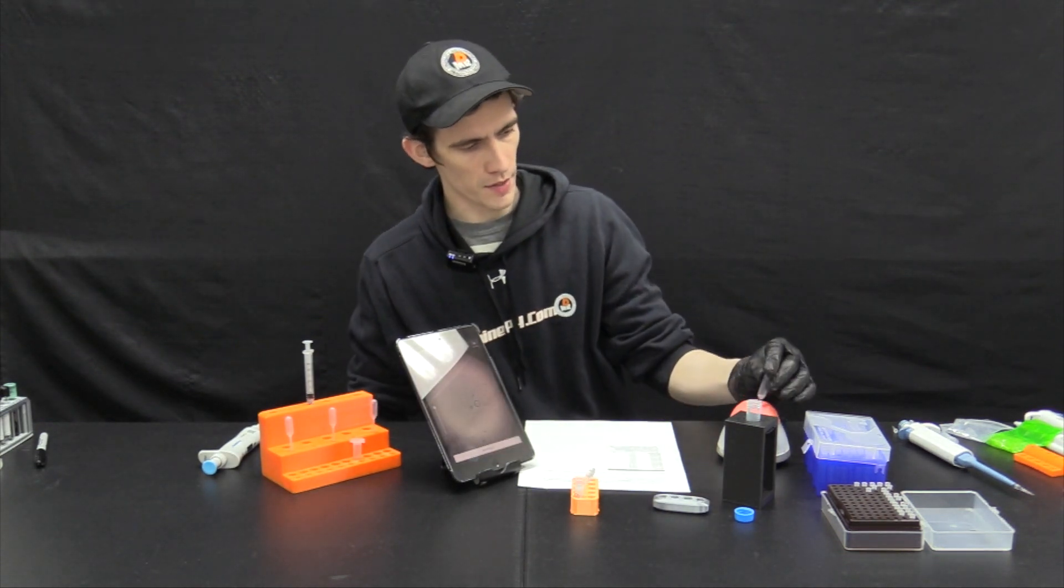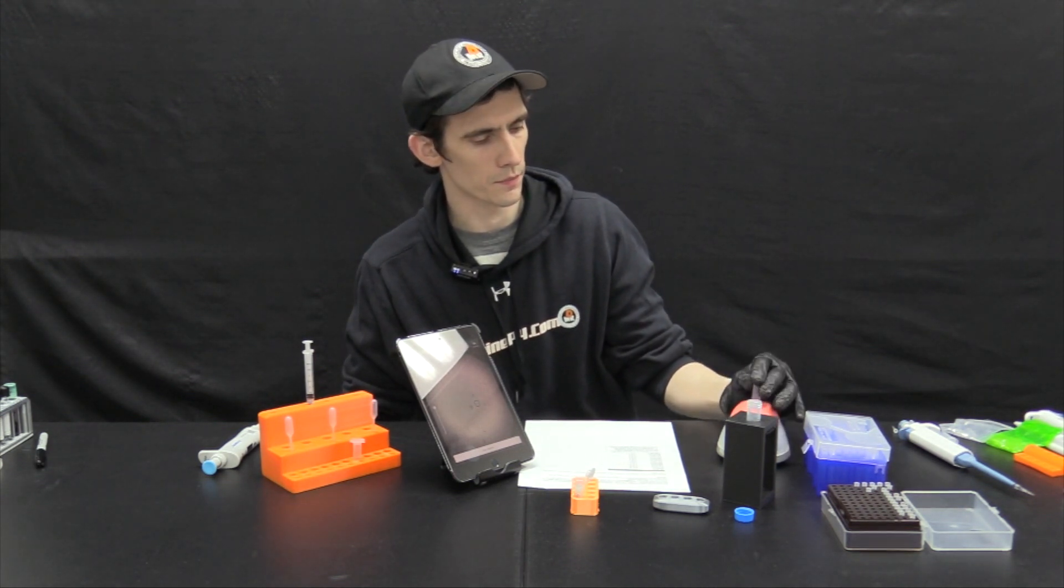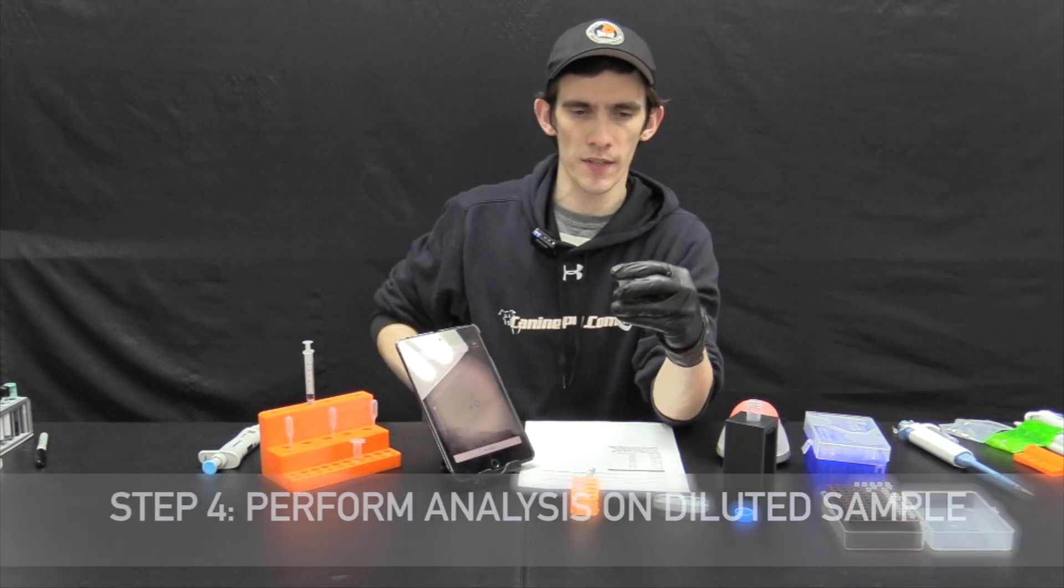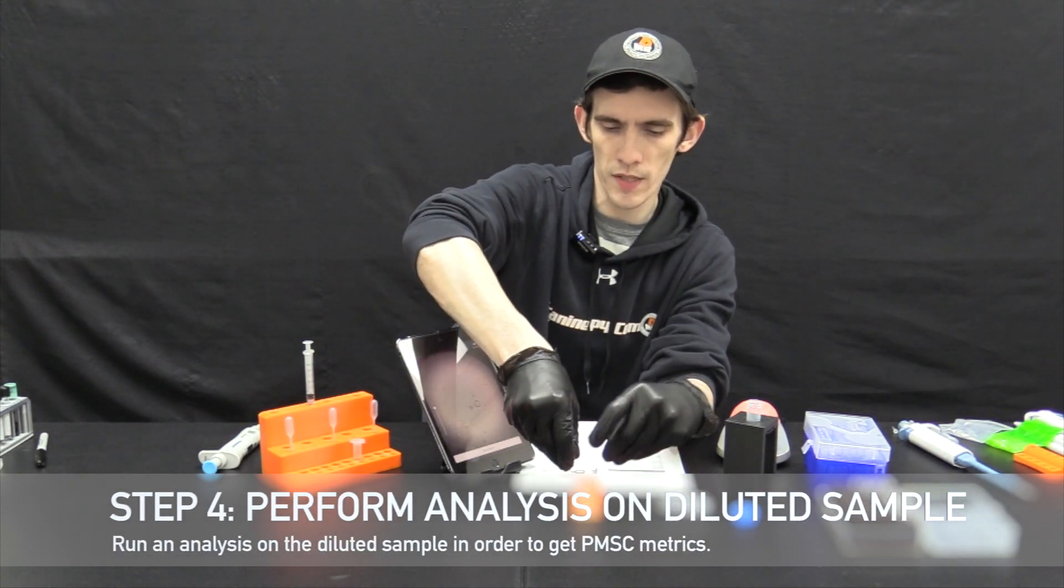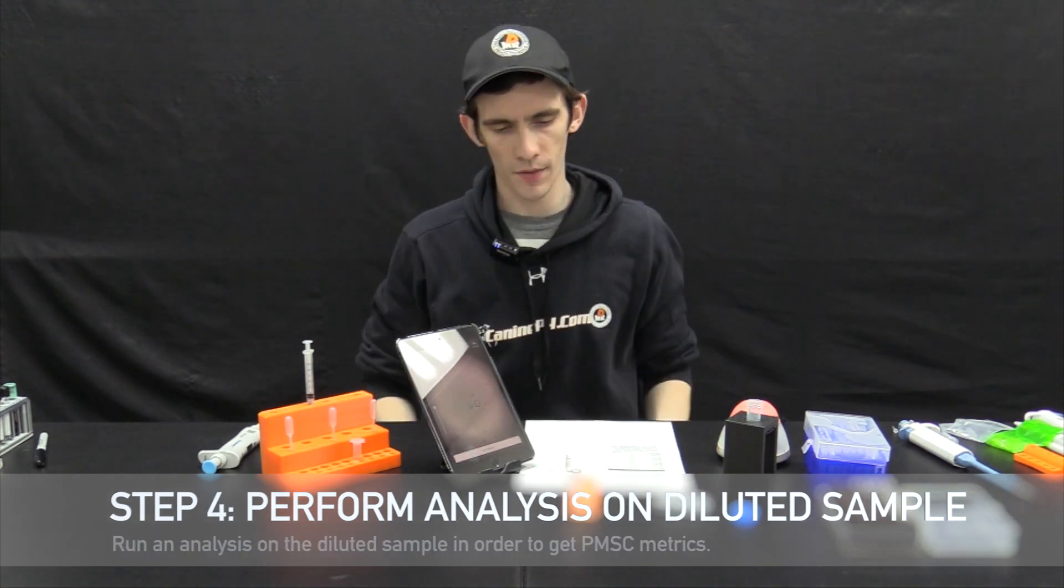You can mix it by inversion and we can even briefly mix it via vortexer. So now once that step is done we have a 1 to 10 dilution and we can proceed with our testing to find the progressive motility of this raw sample.